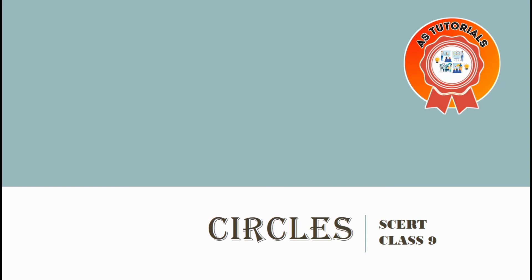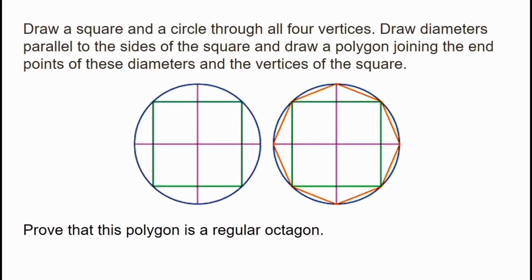Hi, welcome back to our YouTube channel. Draw a square and a circle through all four vertices. Draw diameters parallel to the sides of the square and draw a polygon joining the endpoints of this diameter and the vertices.